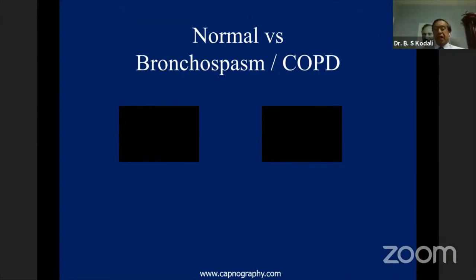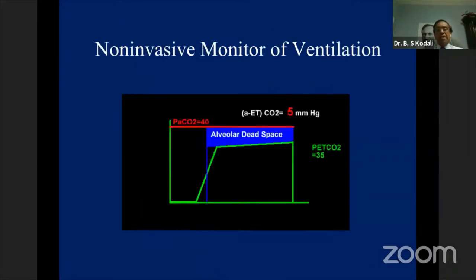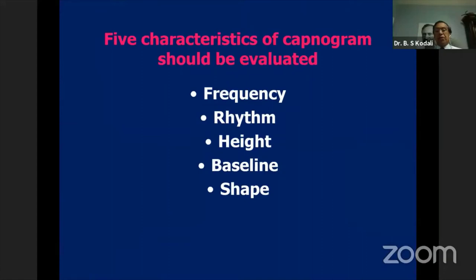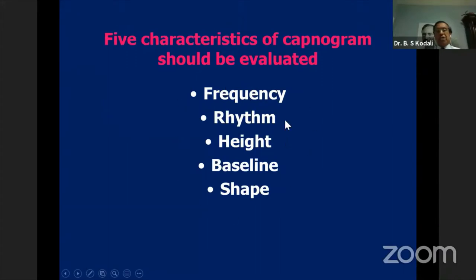Normally, end-tidal CO2 is about 36 mmHg. The end-tidal to arterial CO2 difference of 4–5 mmHg reflects alveolar dead space. When looking at capnography, do so methodically: what is the frequency (rate) of the waveforms; what is the rhythm, regular or irregular; what is the height; what is the baseline — is it returning to zero; and what is the shape? If you look at the capnogram in this fashion, it gives you substantial information in a given clinical scenario.